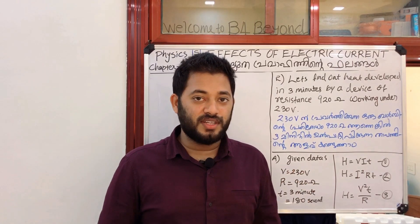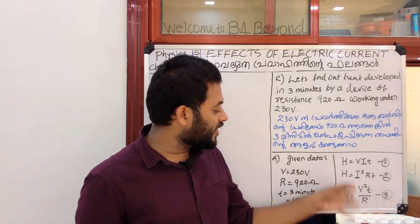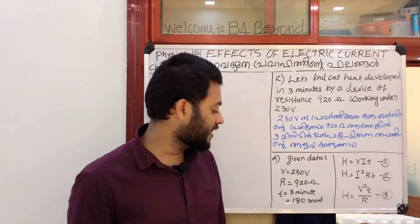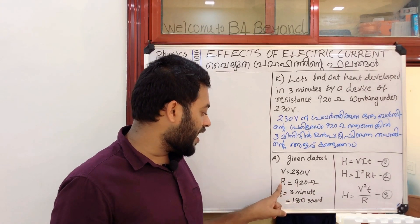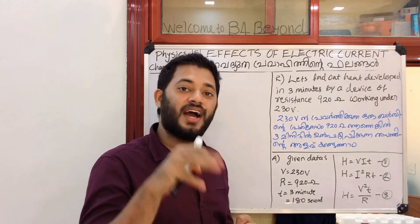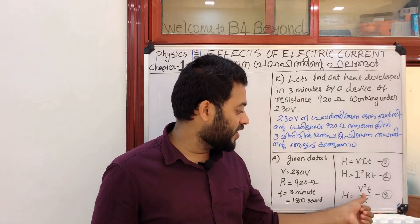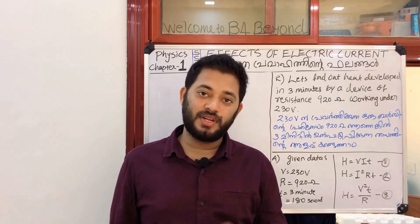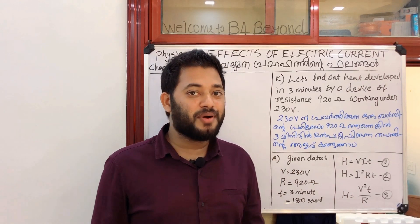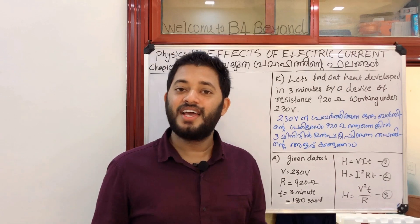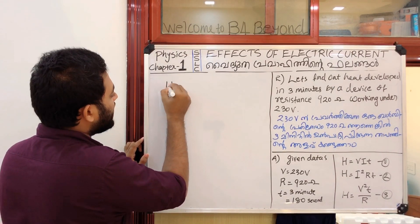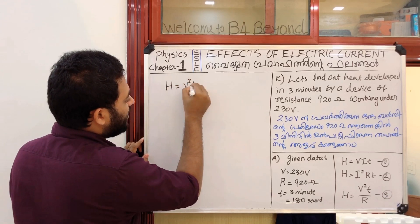We have three equations. Looking at the data, we have V, R, T, and we need to find H. The data is H, V, R, T — so we use equation number 3. We can derive the equation: H equals V squared T by R.